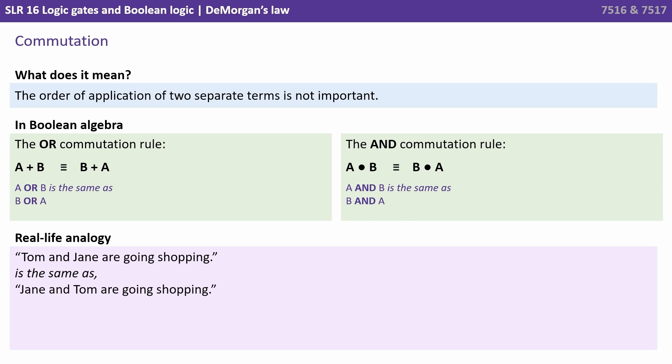The next rule is the rule of commutation. And this tells us that the order of application of two separate terms is not important. So for example A or B is exactly the same as B or A. A and B is the same as B and A. It doesn't matter which way round we have those terms. They're the same expression. So Tom and Jane are going shopping is the same as Jane and Tom are going shopping.